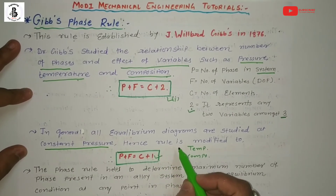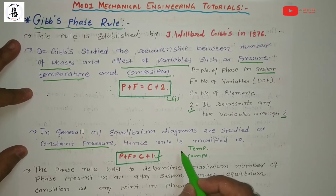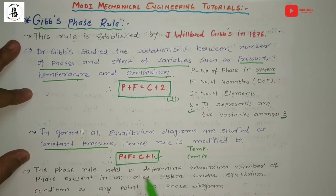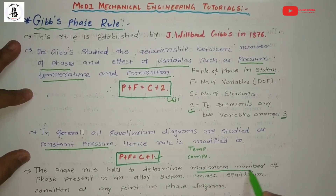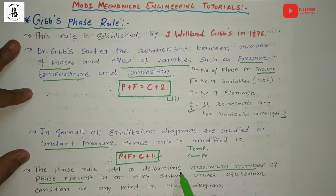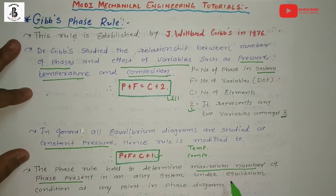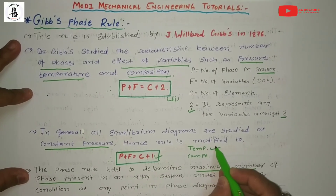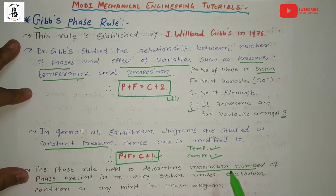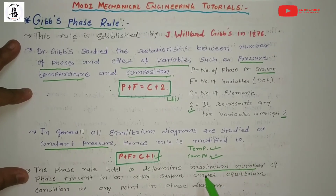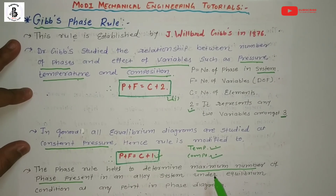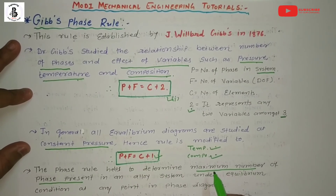This modified phase rule helps to make a relation between the number of phases and the effect of variables. It helps determine the maximum number of phases present in an alloy system — or binary alloy system — under equilibrium conditions at any point in the phase diagram, at different sets of conditions of temperature and composition.